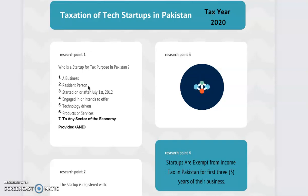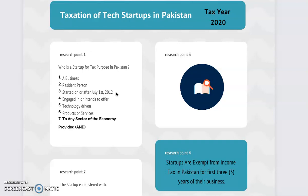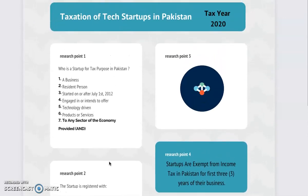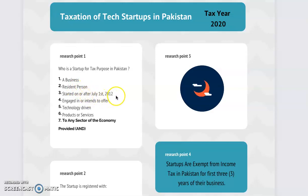All of these conditions have to be met. The third condition is that the business should have started on or after July 1st 2012, which means it should have started in tax year 2013. We are currently in tax year 2020, and these exemptions were put into Pakistani tax law for tax year 2018 and onwards, so we are now in the second or third year of tax exemption.